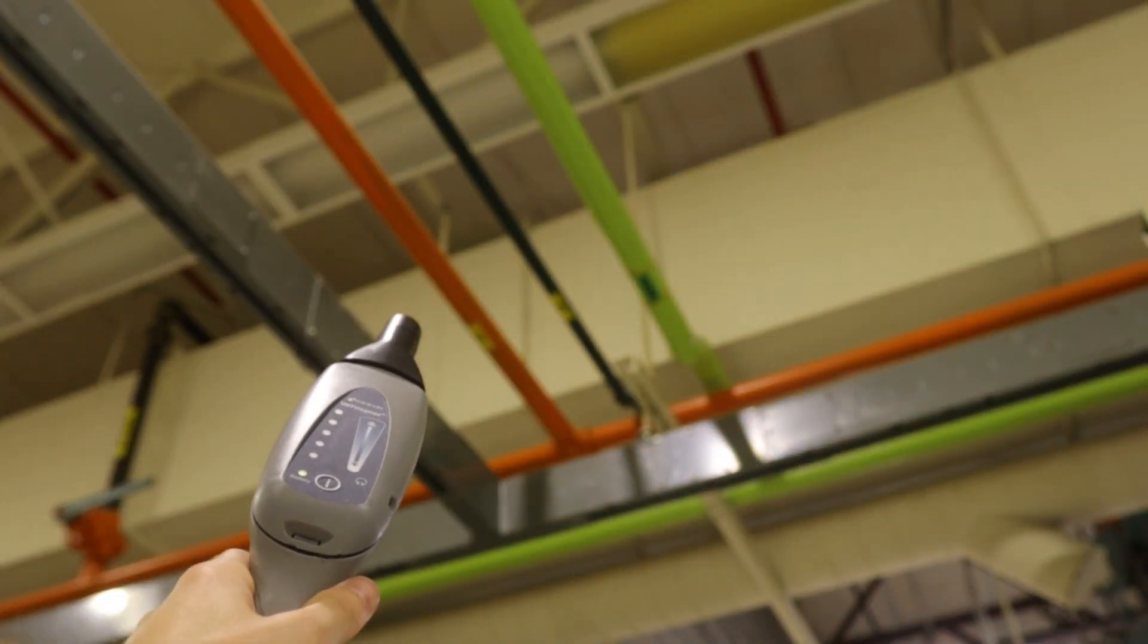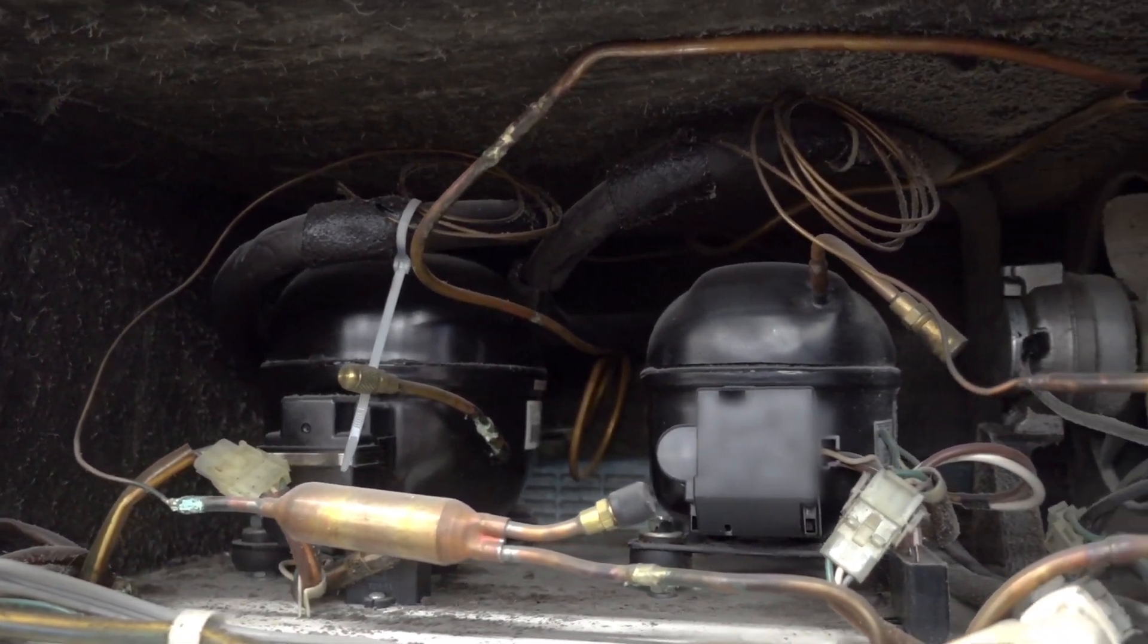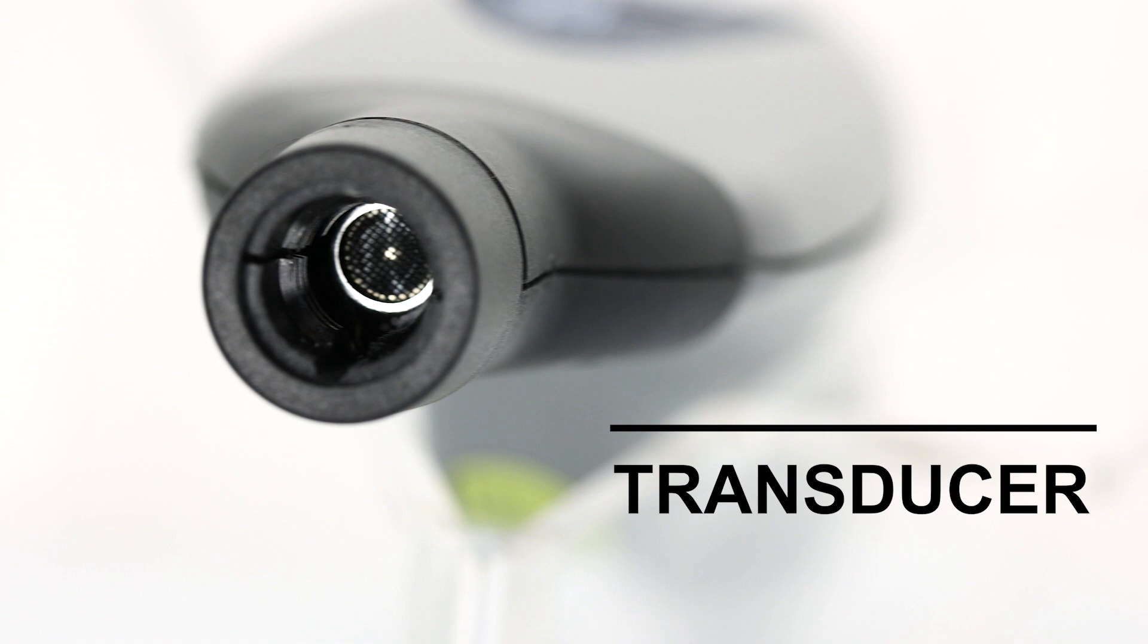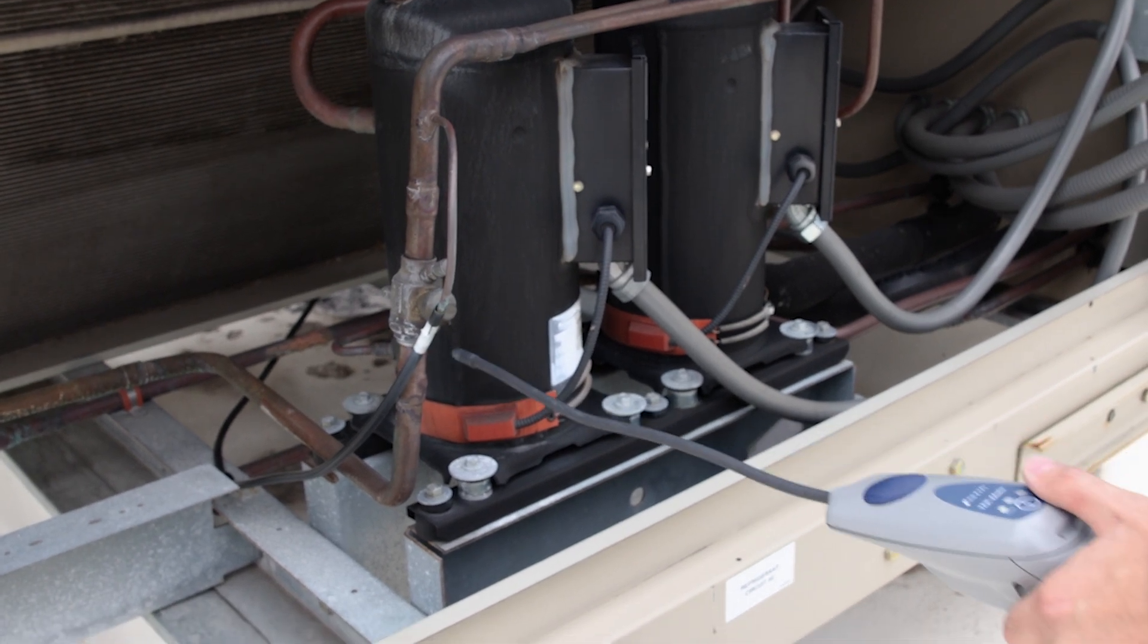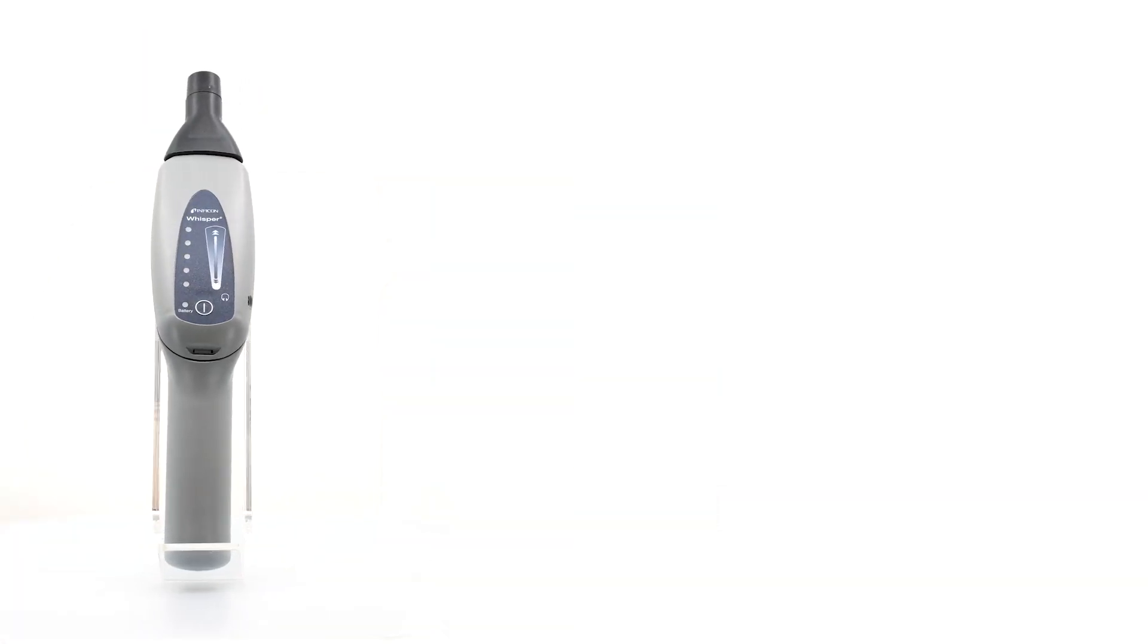That's where ultrasonic comes in. When a pressurized system, like an HVAC system, leaks, the escaping gas creates an ultrasonic disturbance of around 40,000 Hz. That's well outside of the human hearing range. Inficon's Whisper uses a specialized transducer designed to detect the frequencies emitted by those leaks. So instead of identifying the presence of refrigerant, like a traditional leak detector, you're using the ultrasonic leak detector to actually listen for the leak.